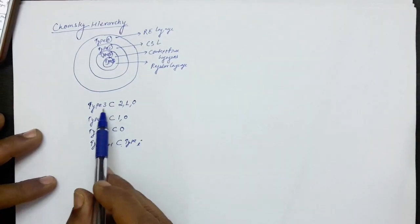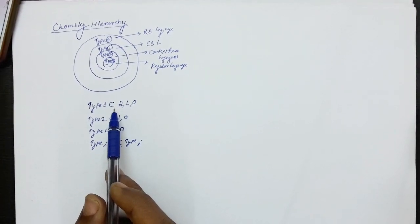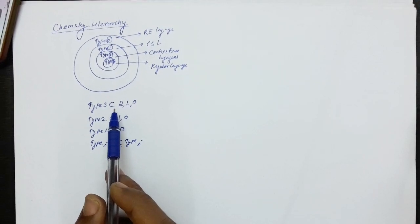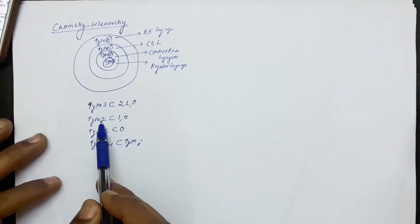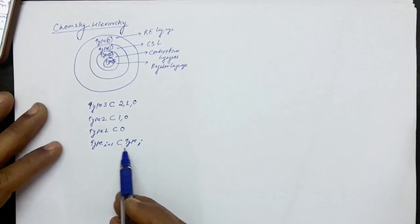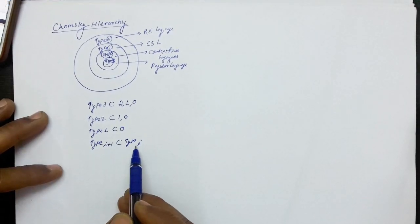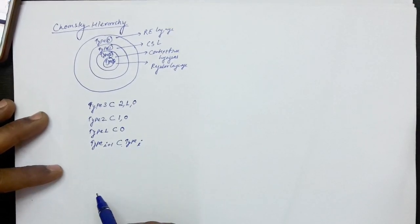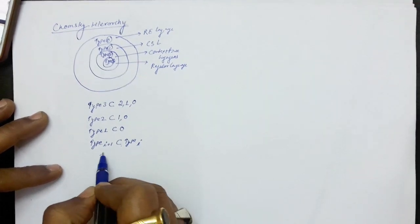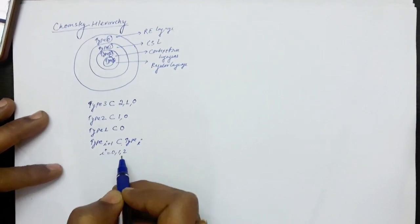It is quite understood that Type 3 is a subset of Type 2 and Type 1, and Type 2 is a subset of Type 1 and Type 0. So any Type i+1 language will be a subset of Type i, where i can range from 0, 1, and 2.